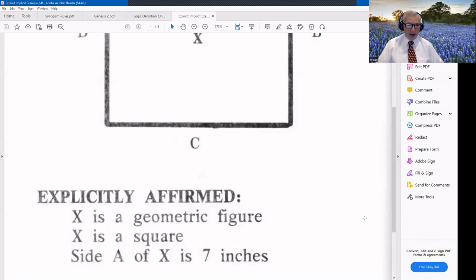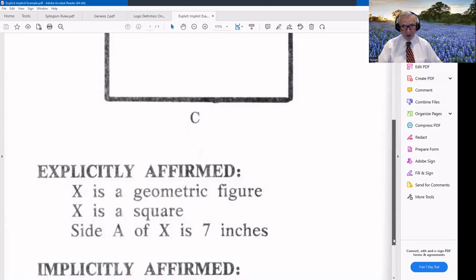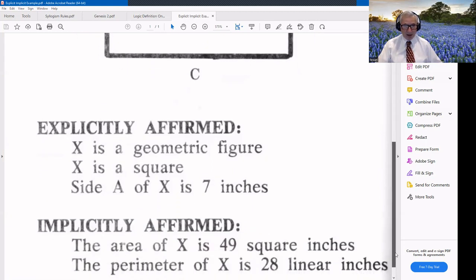And from the looks of things, we can say that X is a square. It appears to be an equal-sided geometric figure. And if we say that side A of X is seven inches, that implies something else. And we infer some other things from what is implied.